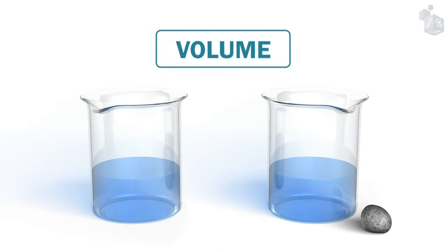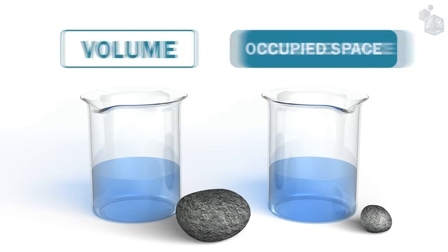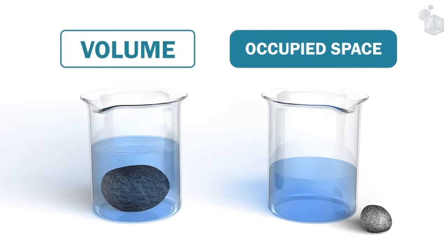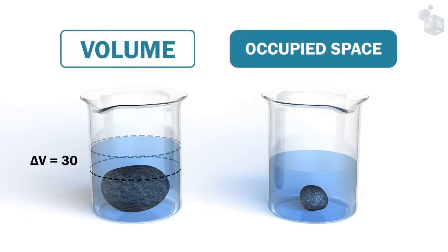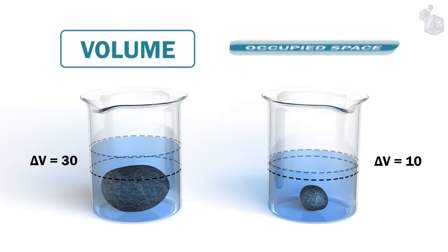The volume of an object is a measurement of the space it occupies. The greater the matter of an object, the greater its volume. Volume is measured in cubic meters or its derived units.